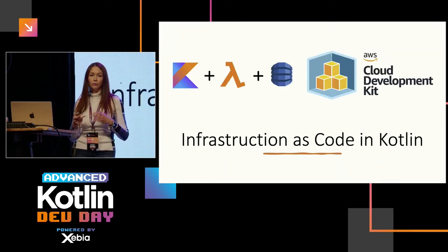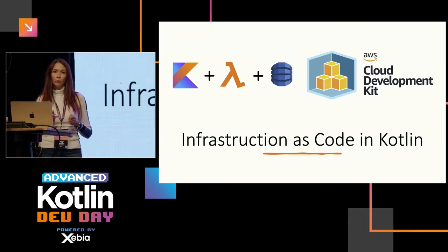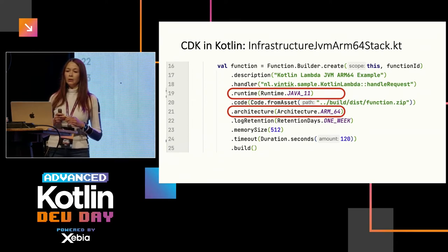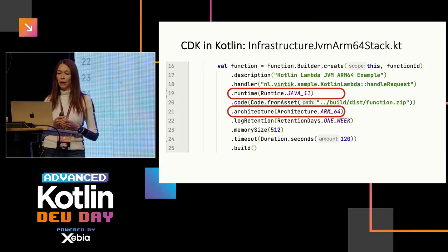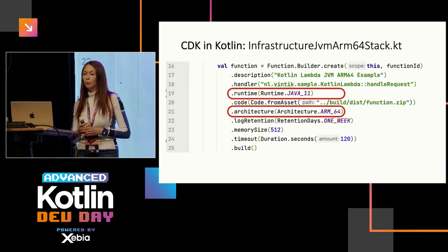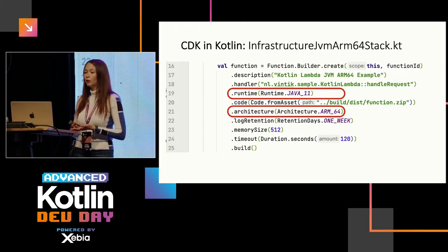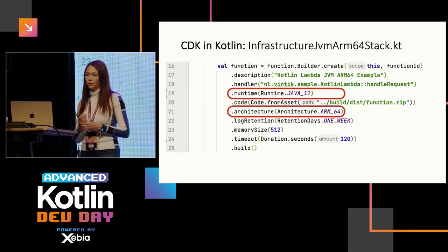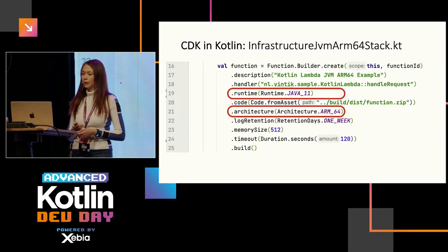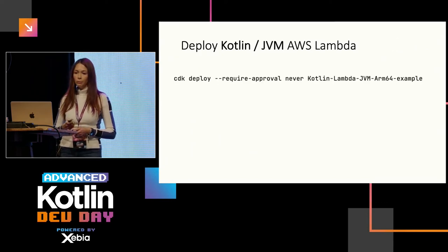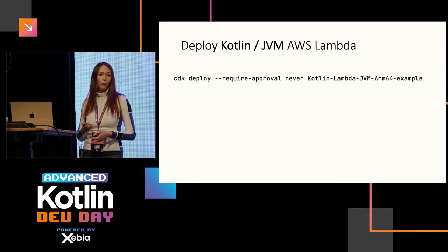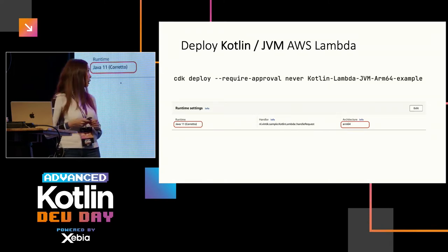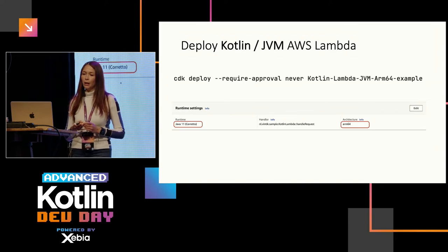Then we configure our function using CDK in Kotlin. On line 18 we specify the handler location. We say we're running on JVM — AWS Lambda currently provides Java 11, but with Kotlin we can run the latest version. We also run on arm64 architecture. Then we run CDK deploy from our CI/CD pipeline, and we can see in the console that we're deployed on JVM on arm64.